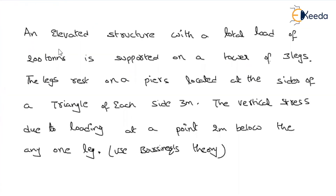First, read the given problem. An elevated structure with a total load of 200 tons is supported on a tower of 3 legs. That means if you imagine a tower of any shape, it is having 3 legs, and whatever the load acting on the tower is 200 tons. The legs rest on piles.